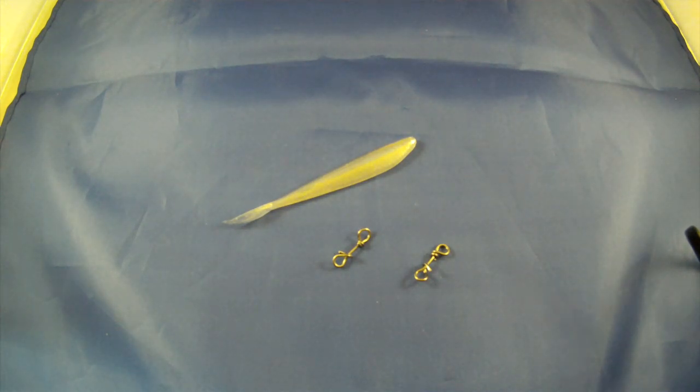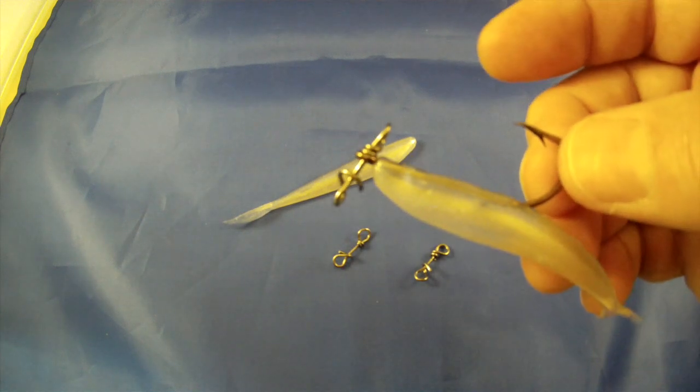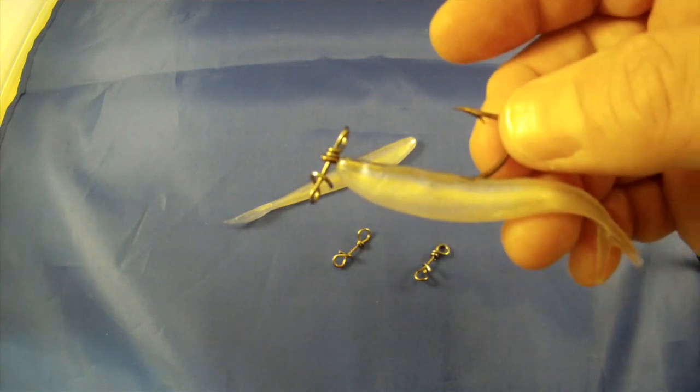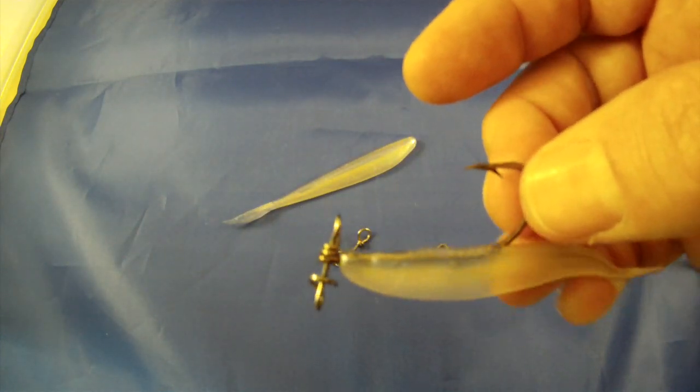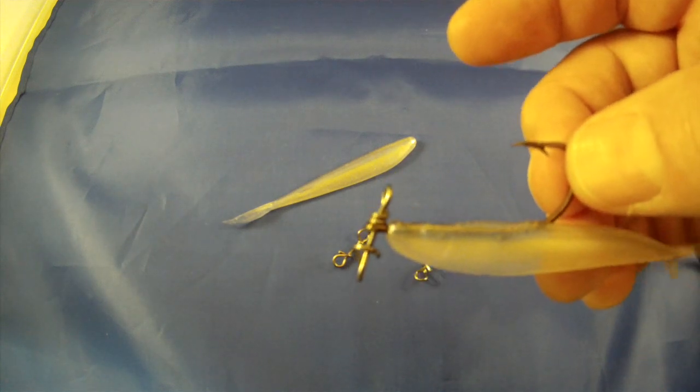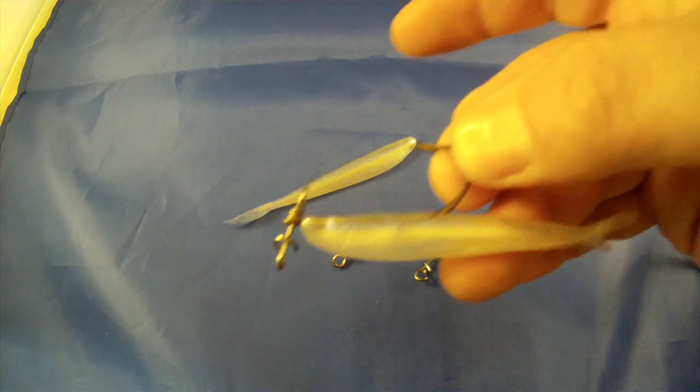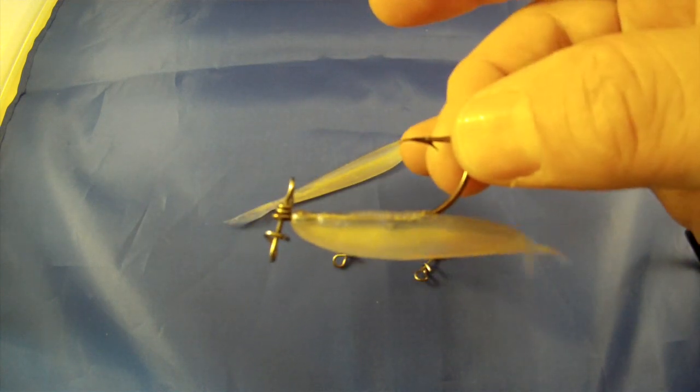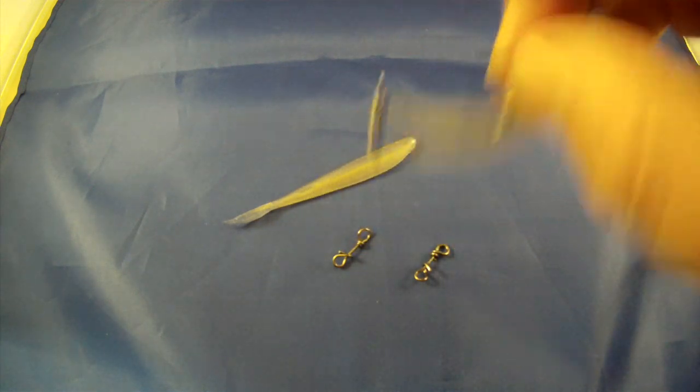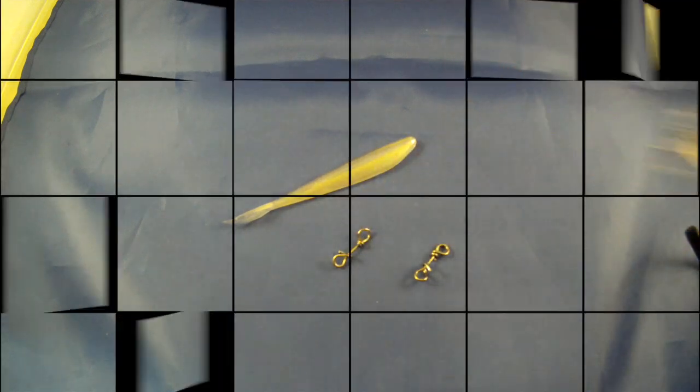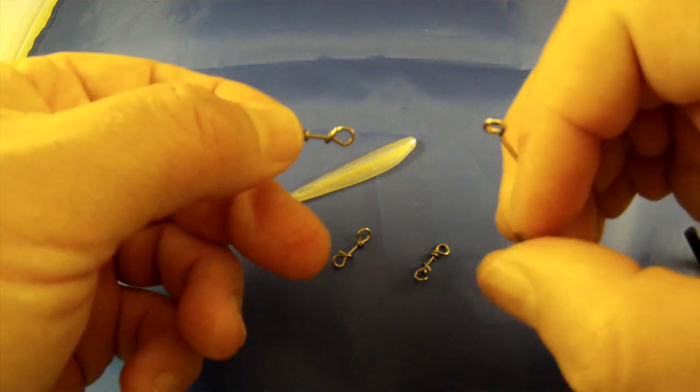I've got another one rigged up right here. That's just an old bait hook from Eagle Claw, and that number is 186A as in Apple, and this is a 2-0. So really it's any style of hook that you like that'll fit on a small 3-inch fluke. So let's see how we're going to get this hook onto this split ring.